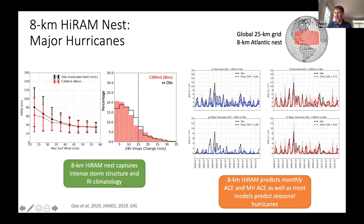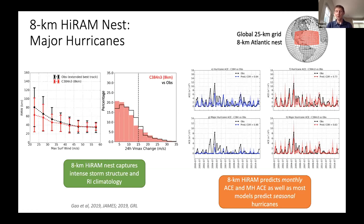Here are some examples from an 8-kilometer HI-RAM with a nested grid over the North Atlantic. On the left is a plot of observed radii of maximum winds from tropical cyclones — a measure of hurricane size. The distribution in the 8-kilometer nest matches observations very well, perhaps a little too small. More interestingly, we were able to capture the right climatology of rapid intensification — maximum wind speed increasing by more than 15 meters per second over 24 hours — something that was not possible in the coarser 25-kilometer model.